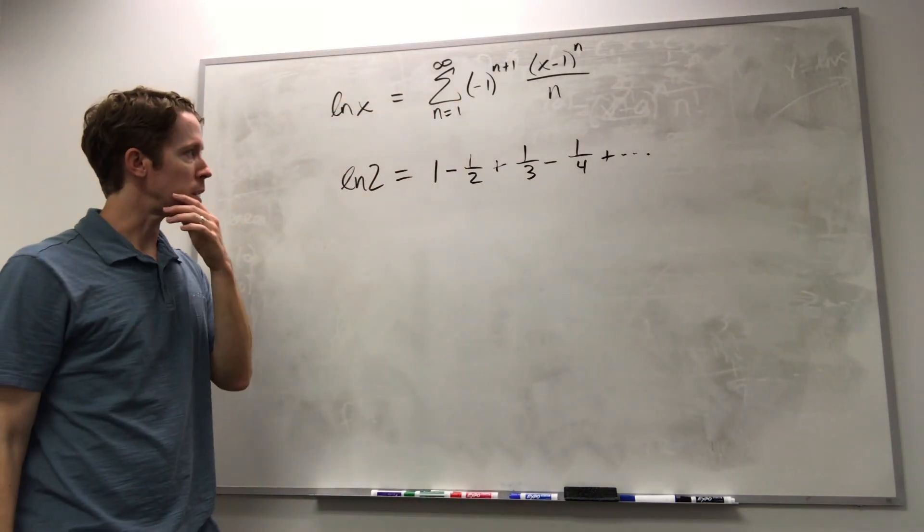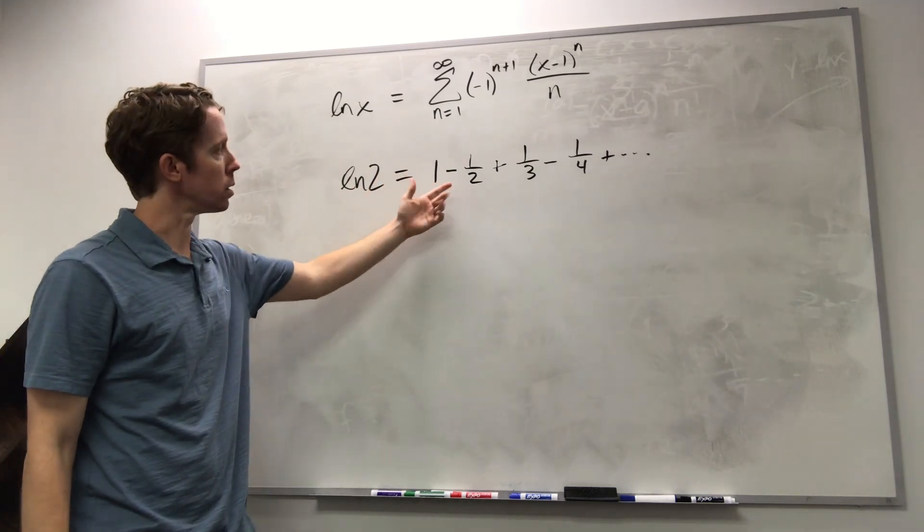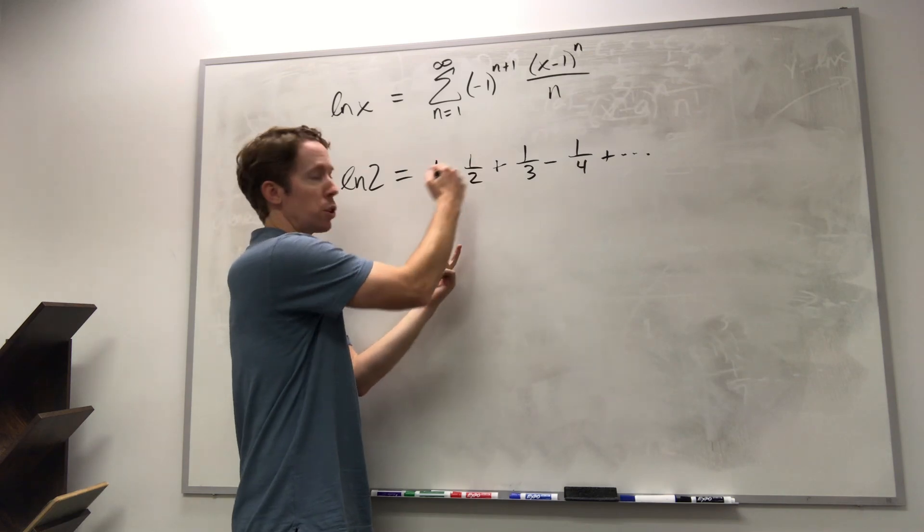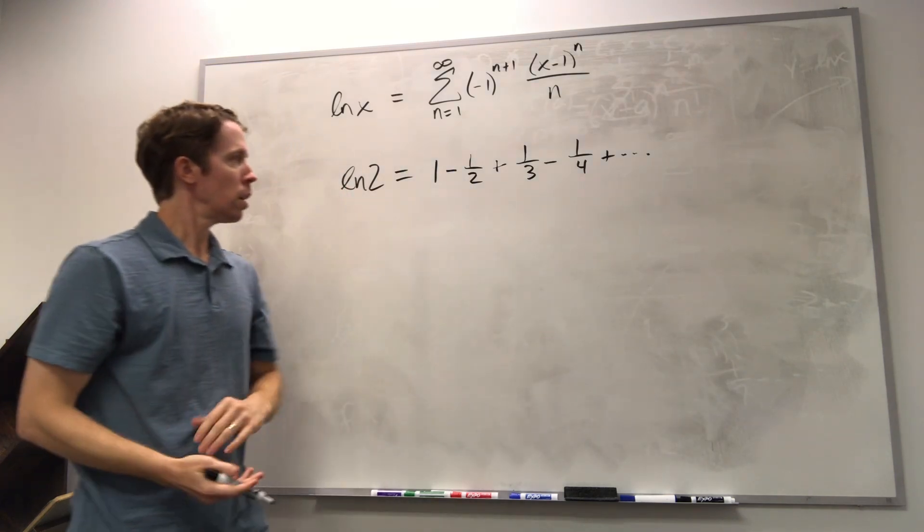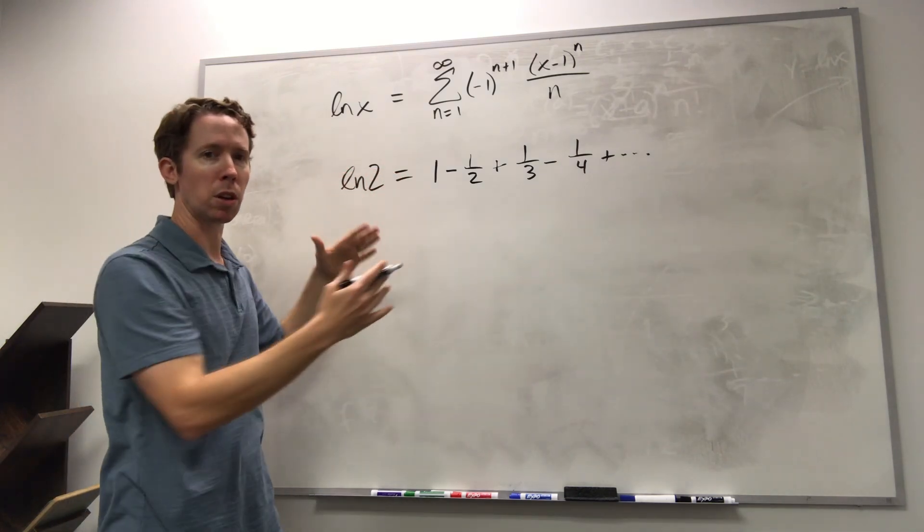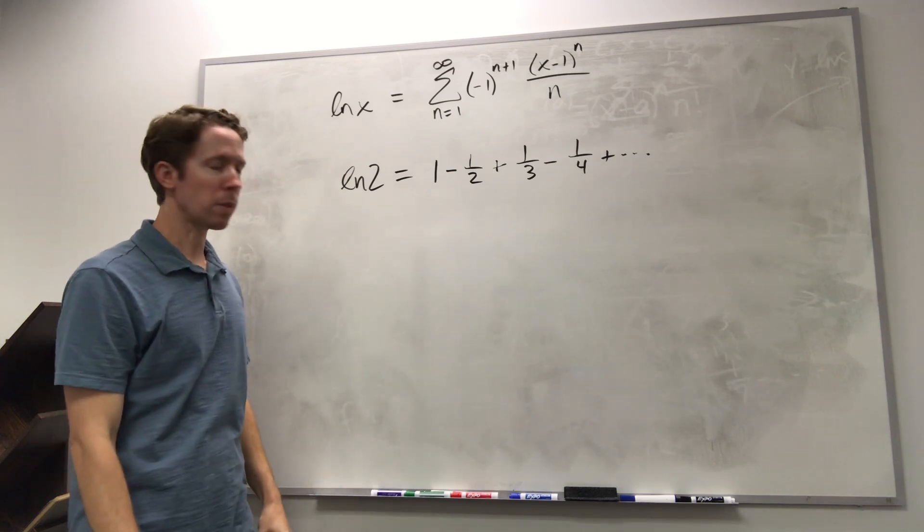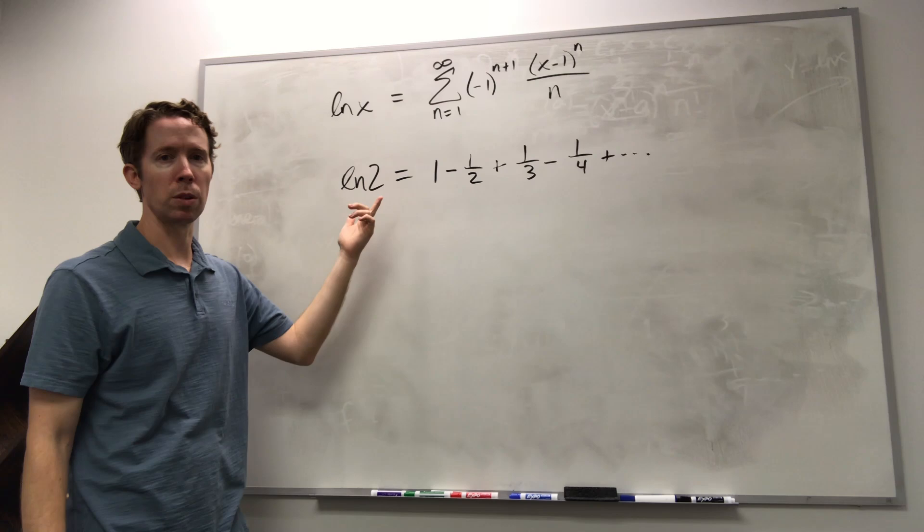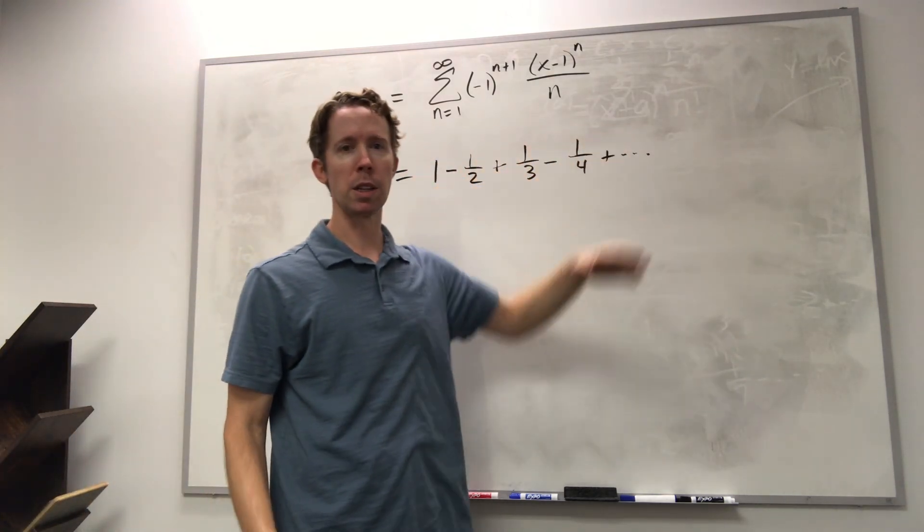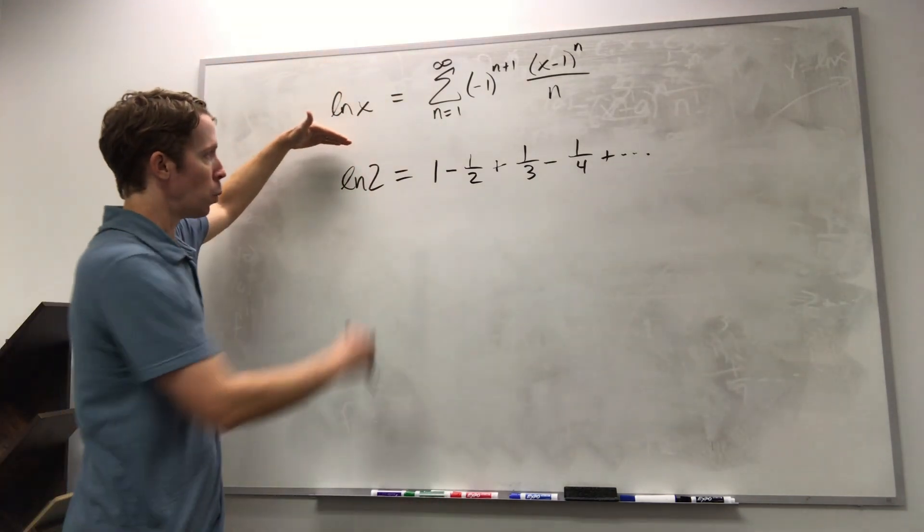This is called the alternating harmonic series. If you start looking at these partial sums, so just look at summing up the first two, and then the first three, and then the first four, and so on, it's pretty obvious that that sequence of partial sums is converging to a finite number. And if you type in natural log of two into a calculator or a computer, you'll see that these approximations are getting closer and closer to that number.